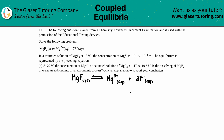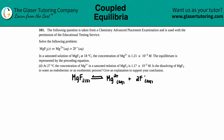Number 101. The following question is taken from a Chemistry Advanced Placement examination and is used with the permission of the Educational Testing Service. Solve the following problem — they give us a balanced equation: in a saturated solution of MgF₂ at 18 degrees Celsius, the concentration of Mg²⁺ is 1.21 times 10 to the negative third molarity.